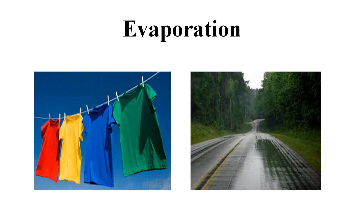We have noticed many times that water disappears from wet clothes as they dry up, and water from wet roads also disappears after the rains. In these cases, water is evaporated. During daytime, sunlight falls on the water present in wet clothes, so water receives heat from the sun, gets evaporated, and our clothes become dry. Similarly, wet roads also dry up. During daytime, all the air surrounding us also gets heated because of the sun.